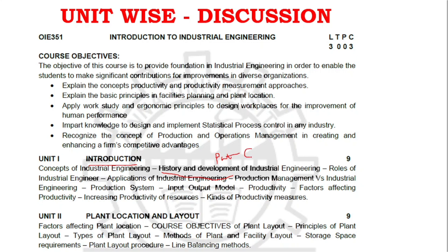Part C questions are answerable if covered properly, so make sure to cover unit one thoroughly. The next very important concept in unit one is the production system and productivity — what are the productivity measures, and the production system overview. These are very very important concepts.